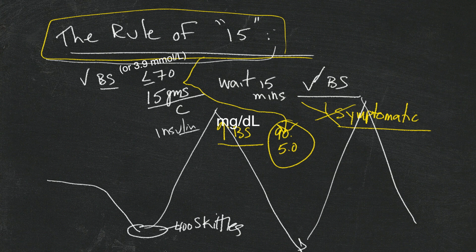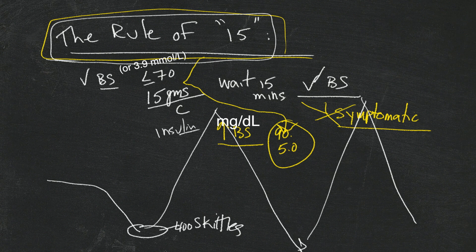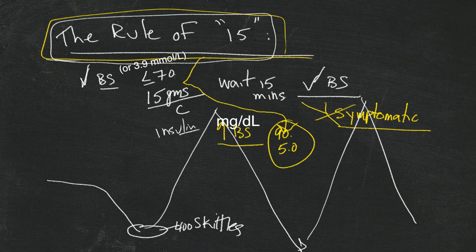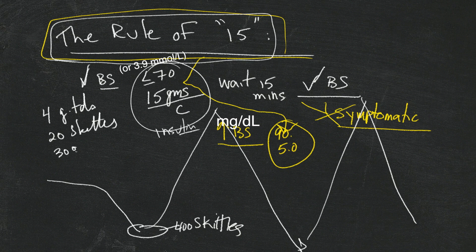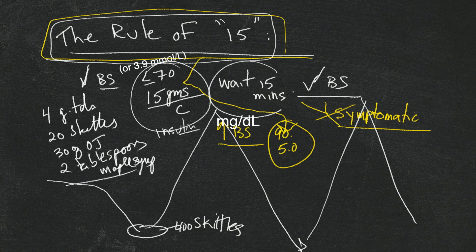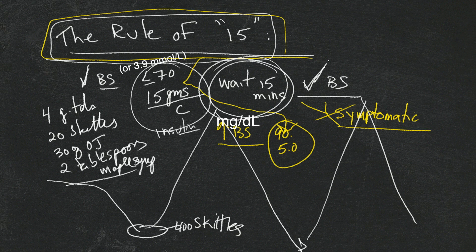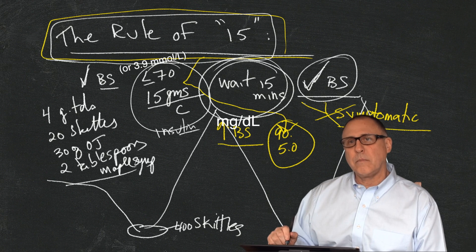There's a certain amount which the rule of 15 sort of outlines for us. Check your blood sugar to make sure you're low, take 15 grams of carbohydrate - which is about four glucose tablets, 20 Skittles, 30 ounces of juice, two tablespoons of maple syrup - wait 15 minutes, don't keep on stuffing your face.